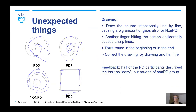We asked for feedback after the task. Generally, the feedback from participants with Parkinson's disease was positive — half of them described the tasks as easy, but none of the other group used that word. The participants without Parkinson's said that the tasks were surprisingly hard and challenging.